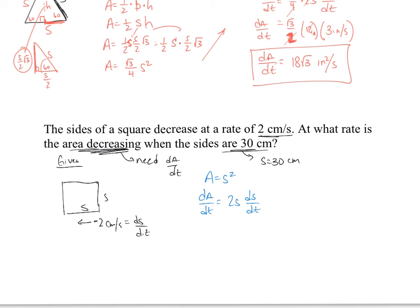dA/dt equals 2s ds/dt. All right. Now I can plug in values I know. So dA/dt equals 2. And s is going to be when it's 30 centimeters. And I know what ds/dt is. It's decreasing at negative 2 centimeters per second. So now let's go ahead and finish this problem. So dA/dt equals, this will be negative 4 times 30, which would be negative 120 square centimeters per second. Now notice the negative because we are decreasing. The area is decreasing.